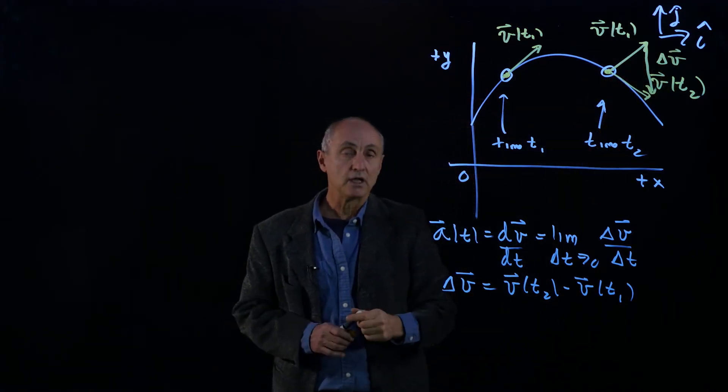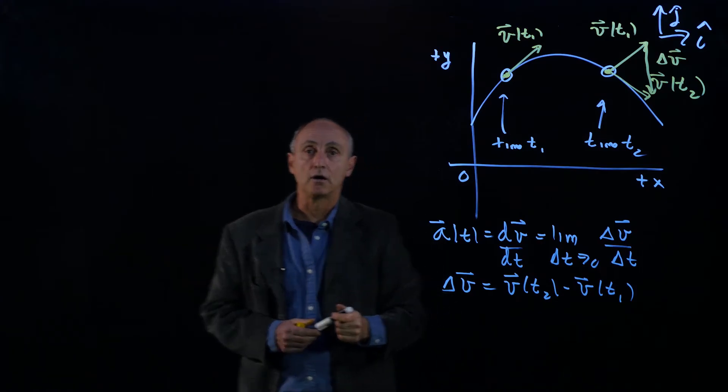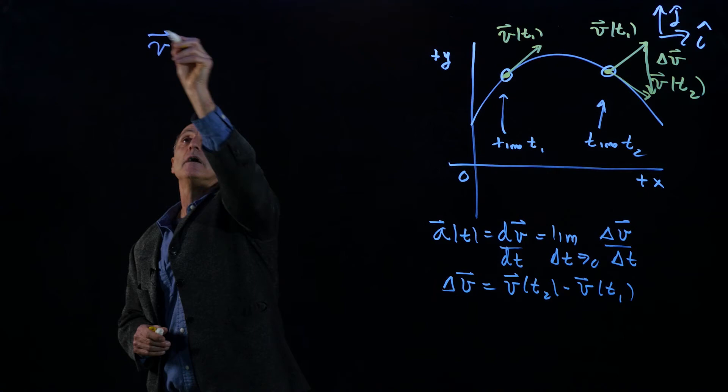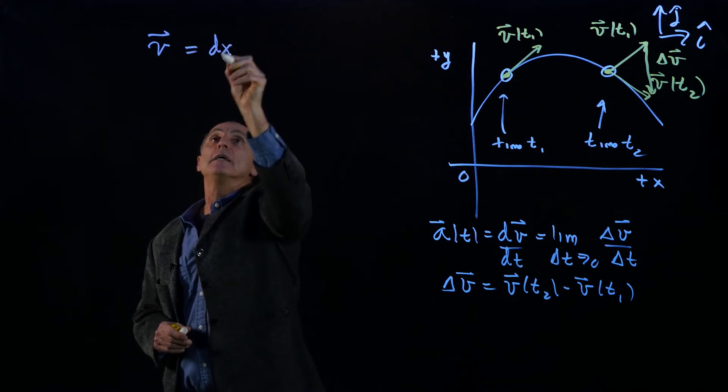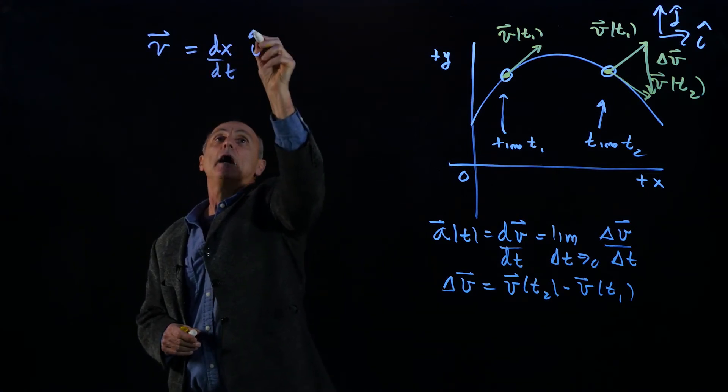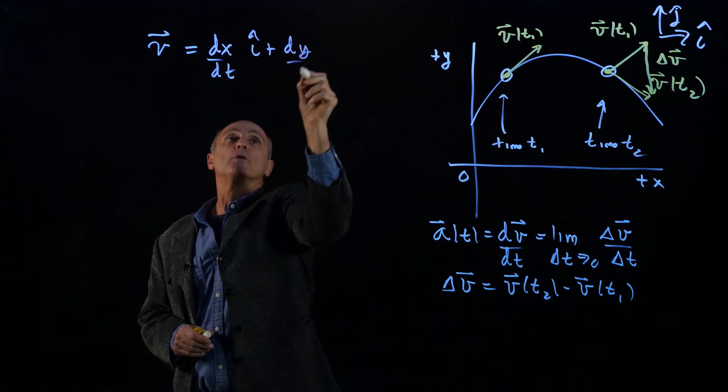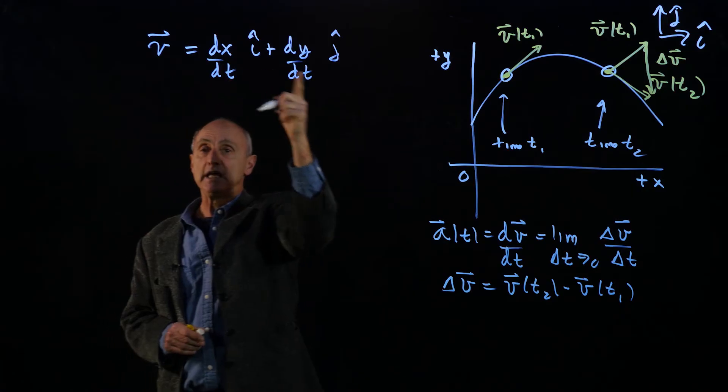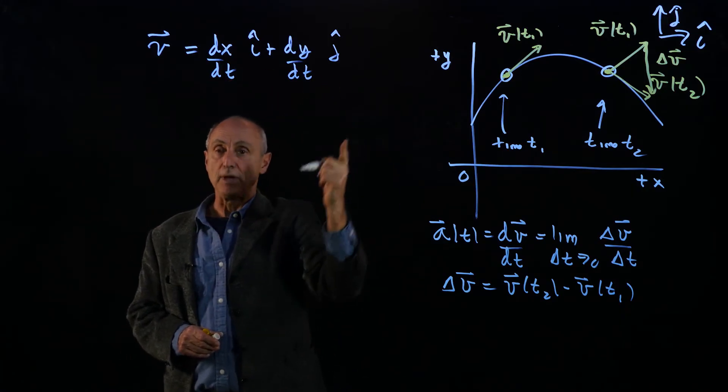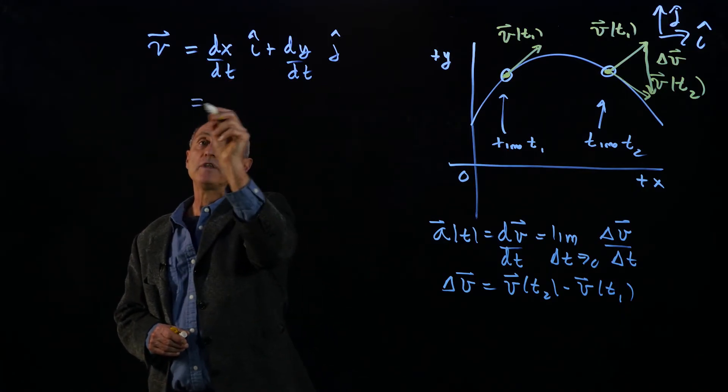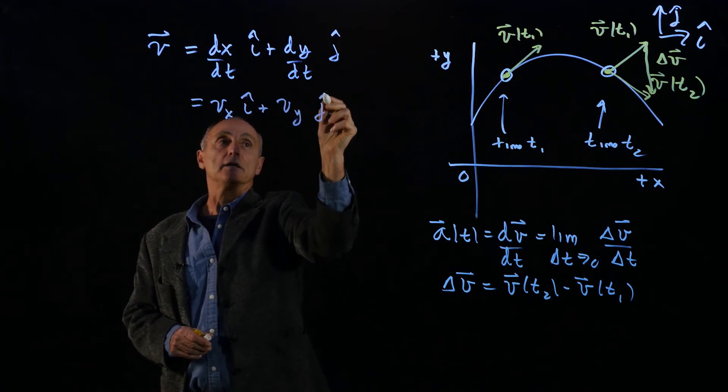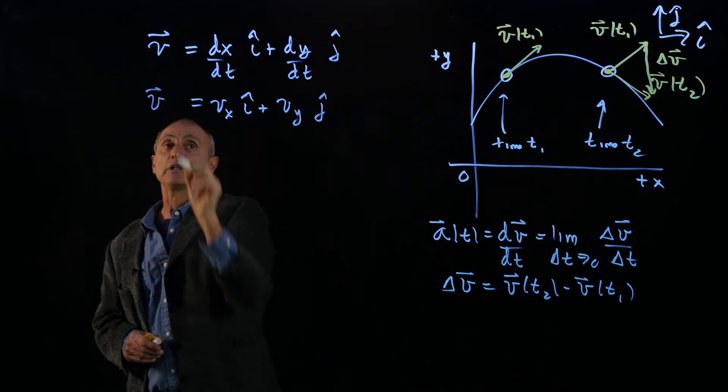So what we need to do is just trust our calculus. And so when we write the velocity as dx dt i-hat plus dy dt j-hat, and we're now treating each direction independently, we call this vx i-hat plus vy j-hat, so that's our velocity vector.